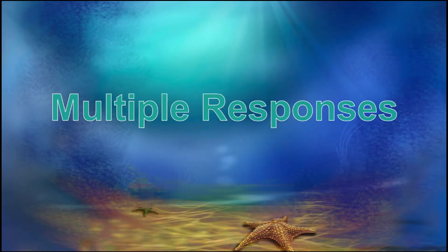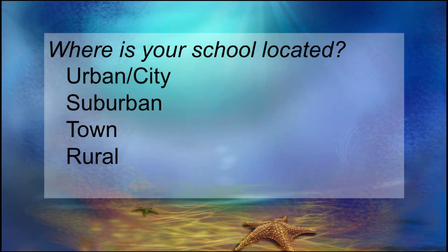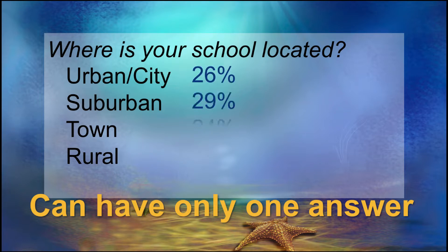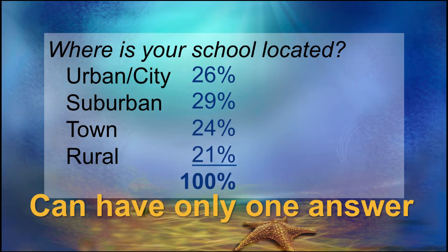Some questions can have only one answer. We ask teachers, where is your school located? Because the school can be located in only one place, there can only be one answer. This is clean and easy to use as a researcher — each respondent can only choose one option, so the results will be percentages that add up to 100%. But other questions allow for multiple answers, and using this powerful strategy in a survey can create problems for us later on, so we want to plan ahead on how to treat these multiple response items in SPSS.